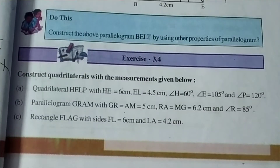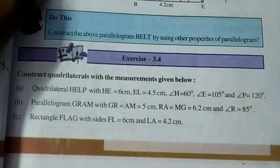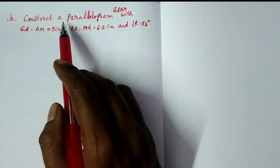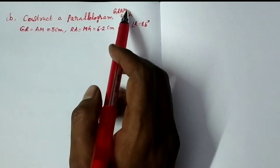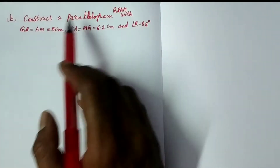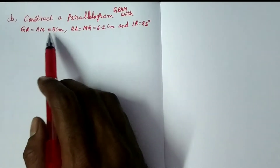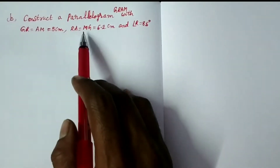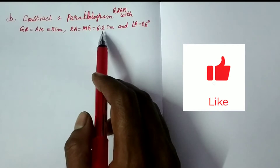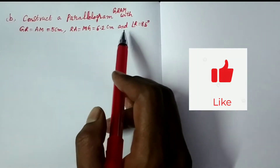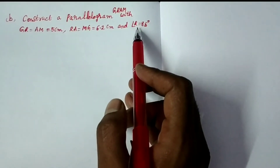Hi, this is Madhubapu. Construct a parallelogram GRAM with GR equals AM equals 5 cm, RA equals MG equals 6.2 cm, and angle R equals 85 degrees.